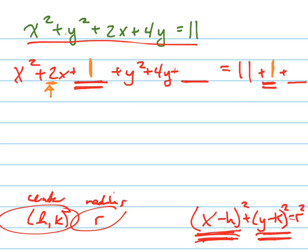I'll do the same thing with the Y terms here. What's half of 4? 2. What's 4 squared? I'm sorry, what's 2 squared? Half of 4 is 2 and 2 squared is? 4. So I'm adding 4 there and I'm adding 4 there.